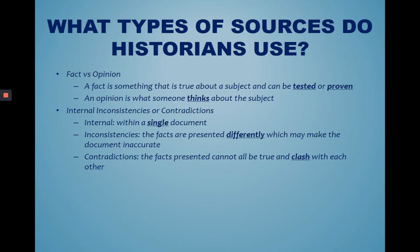Internal consistencies or contradictions — internal means within a single document. So if you are looking at a letter from a soldier from the American Revolution, you're going to look inside that single document. Inconsistencies are when facts are presented differently, which may make the document inaccurate. For example, he might tell you that it's winter and that it's really cold, but might forget to tell you other things like where they were staying or who was there, so it doesn't always match up with the information that is out there.